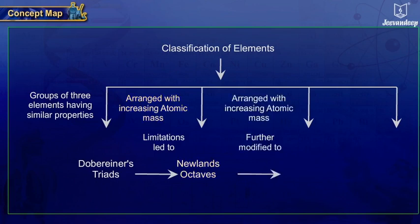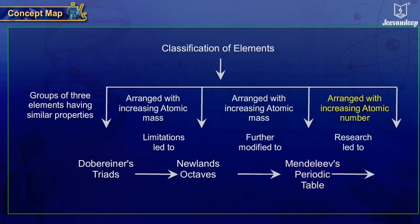This arrangement was further modified by Mendeleev. It was named Mendeleev's periodic table. Further research by Moseley led to arranging the elements in order of increasing atomic number. This classification was called the modern periodic table.